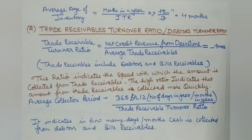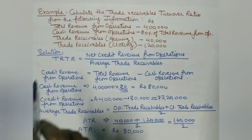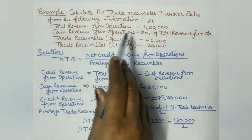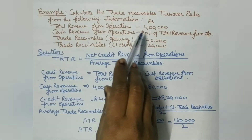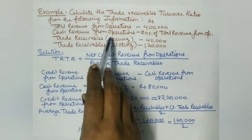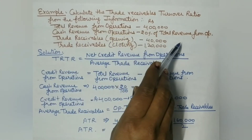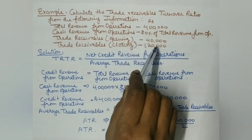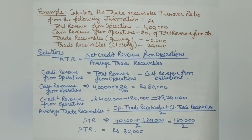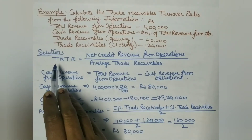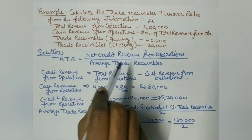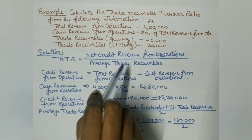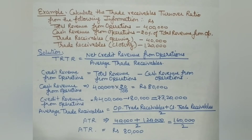Now let's understand this with an example. Calculate the trade receivable turnover ratio from the following information: total revenue from operations is ₹4 lakh; cash revenue from operations is 20% of total revenue; opening trade receivables are ₹40,000; and closing trade receivables are ₹1,20,000.